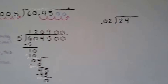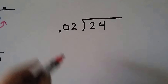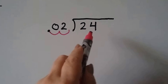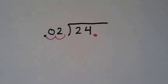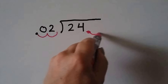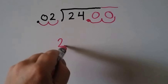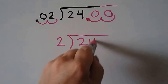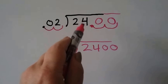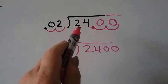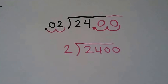Now if the divisor has a decimal but the dividend doesn't, and we need to move it back two hops, we can make a decimal point behind the dividend and add the zeros. So now we've got two going into 2,400. If the dividend doesn't have a decimal to move back, give it one and add as many zeros as the divisor needed to go back.